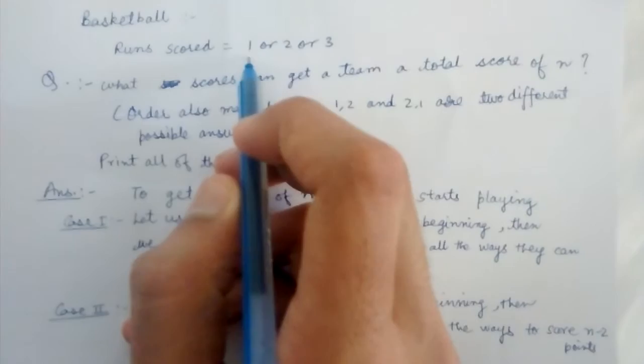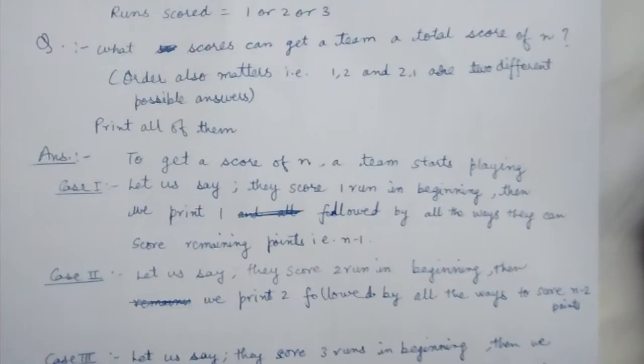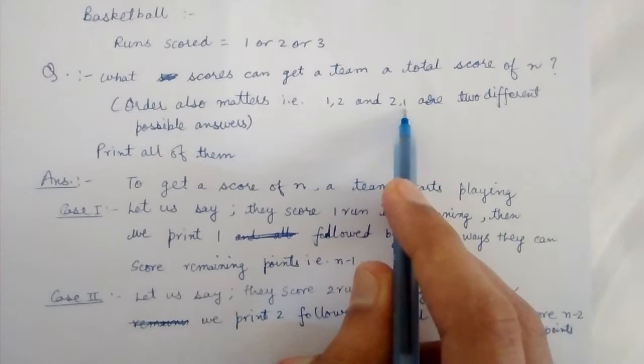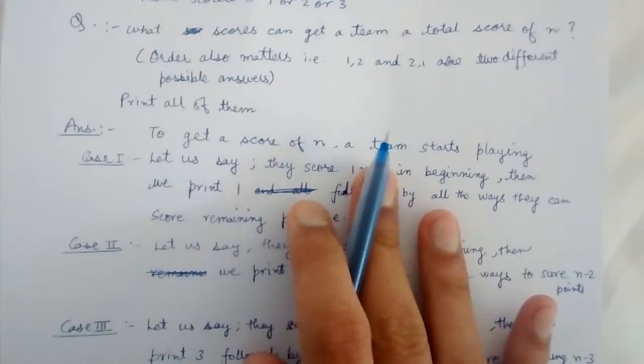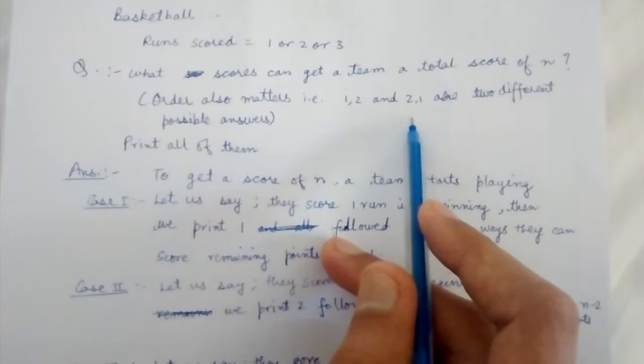So the question is: what scores can get a team a total score of N? And here, 1 and 2 and score of 2 comma 1 are considered as two different scores. That is, if a team wants to score 3 points, it can score it by 1 comma 2 and 2 comma 1. So these are considered two different cases.